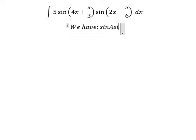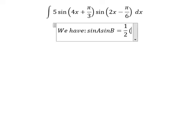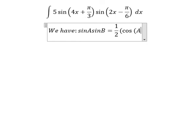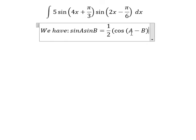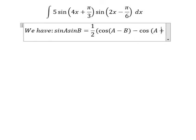sine A sine B equals one over two times cosine of A minus B minus cosine of A plus B.